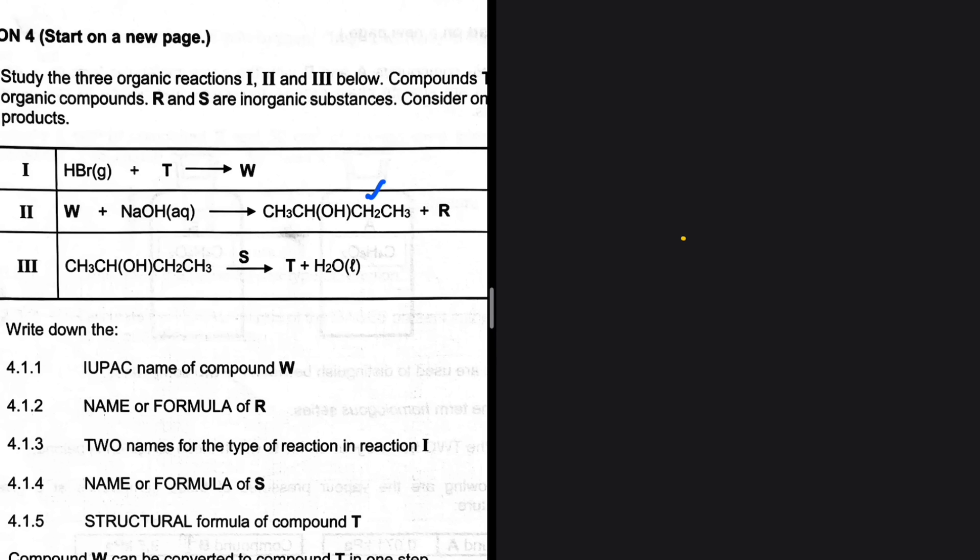When we add NaOH to W, a substitution reaction occurs, we get CH3CHOHCH2CH3. We know that W is saturated, it will be a haloalkane. If W is a haloalkane and we add NaOH, then reaction 2 is actually a substitution reaction. We can write the formula for W: it should be CH3CHBrCH2CH3.